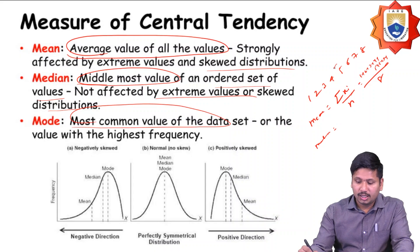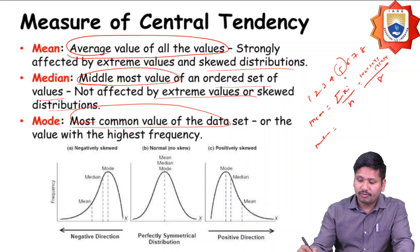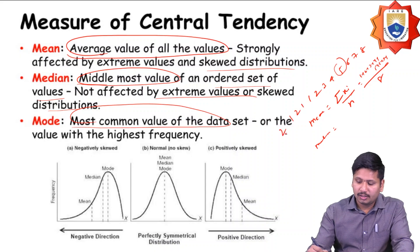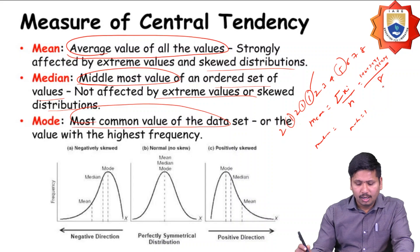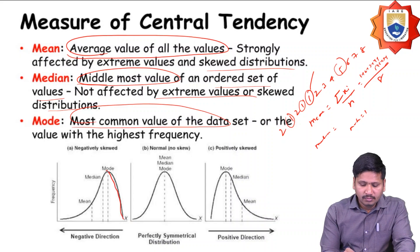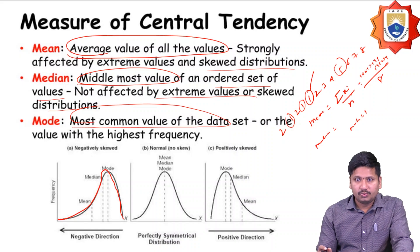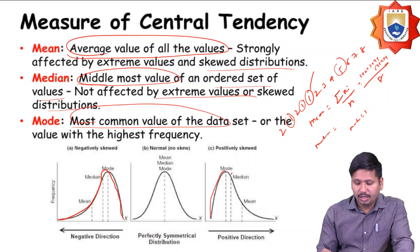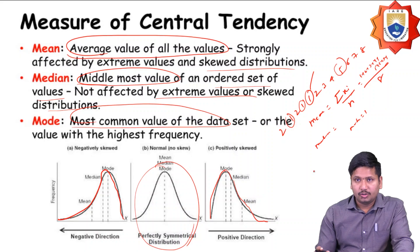The median is the middle value of the ordered data series, and the mode is the most frequently occurring value — for instance, if a value like 1 appears most often, then mode equals 1. Distributions can be negatively skewed, where the curve is reflected to the left side, or positively skewed, where the curve is reflected to the right side. A perfect symmetric distribution has no skew.